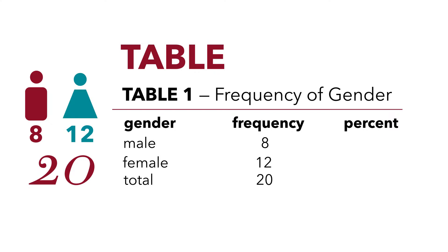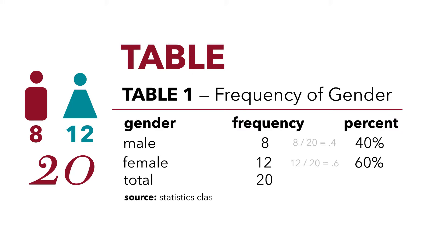Our percentages, if you recall, were 40% and 60%. 8 over 20 is 0.4, and 12 over 20 is 0.6 — that's where those numbers came from in the previous video. I'm going to include one more thing: Source. I'm just going to call this Statistics Class Survey.